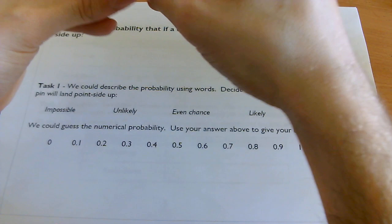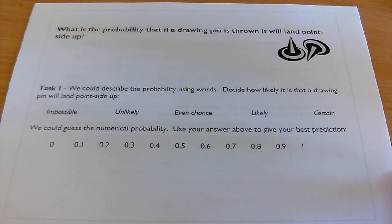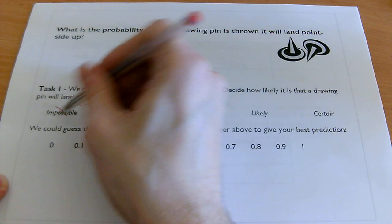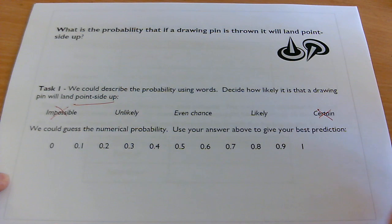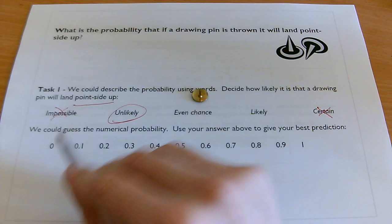Looking at it, it looks pretty heavy on the bottom. So maybe it's more likely to land there. But then again, it seems to want to balance over on its point. So I'm not really sure. But initially, I'm pretty sure that it's not going to be impossible to land point side up. So I'm going to cross that description out. And I'm also quite sure it's not certain to land point side up. So if I'm looking at that, maybe I'm going to say it's unlikely. But that is really just a guess at this point.